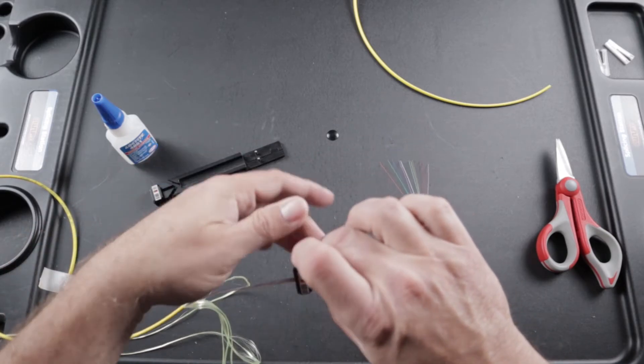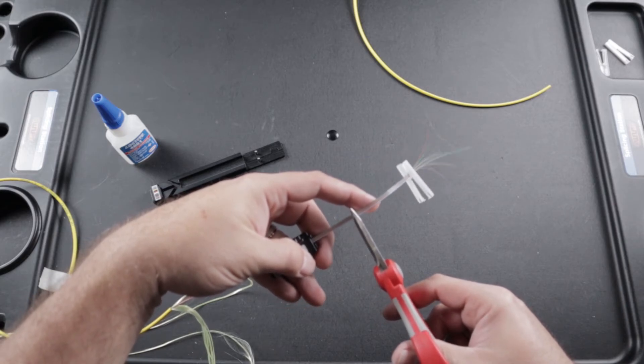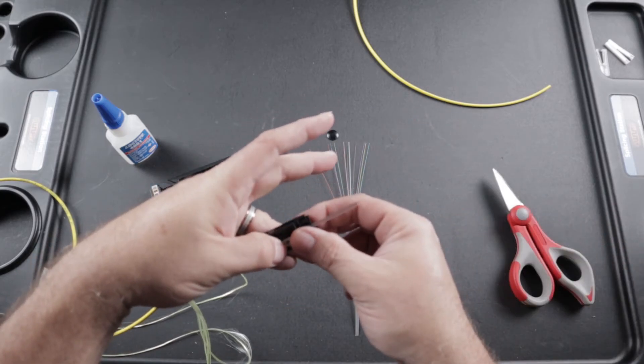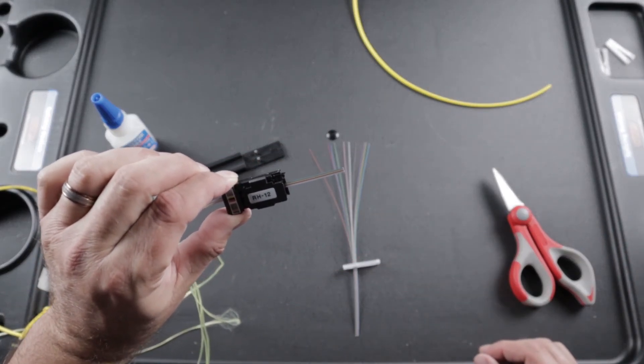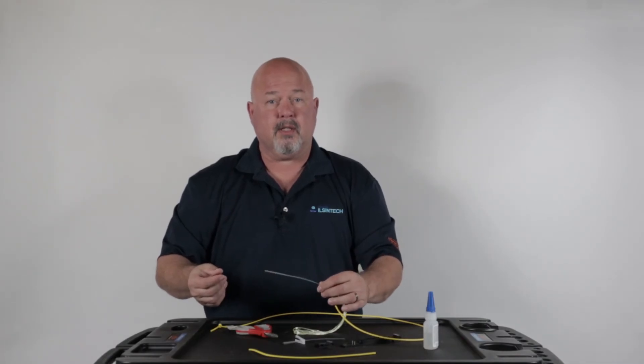Remove your holder. Trim your fiber. You are now ready to use this in your mass fusion splicer. Thank you. This concludes this video.